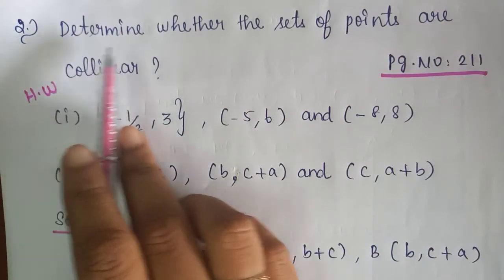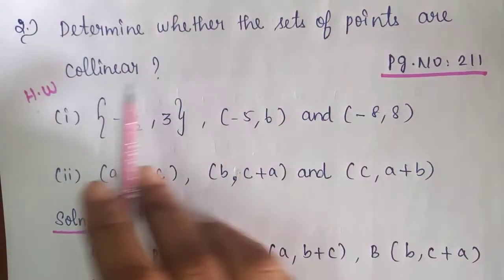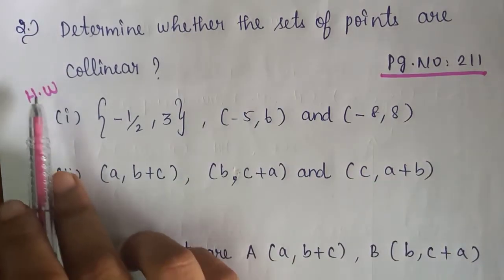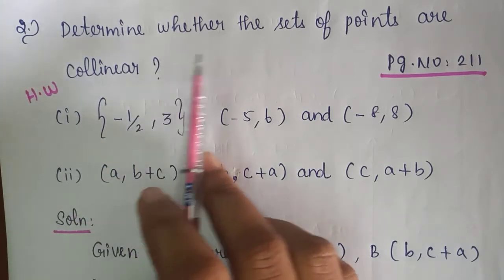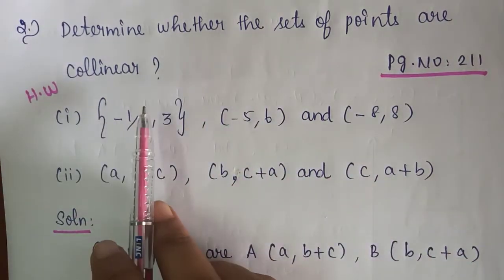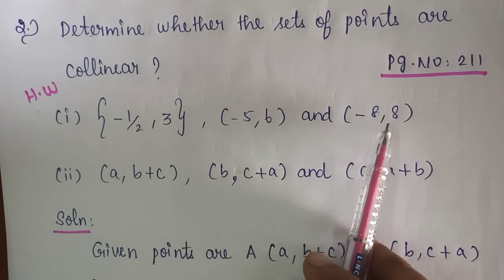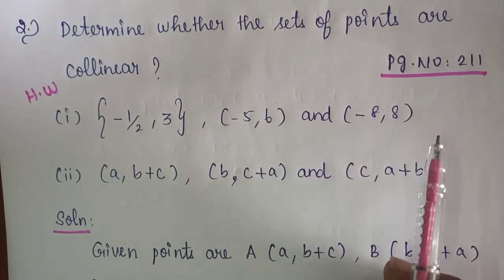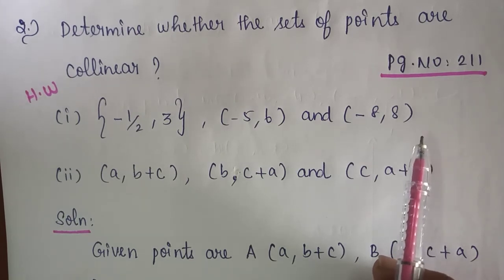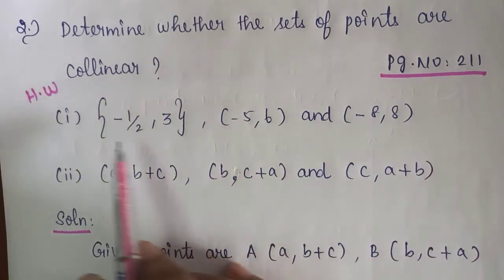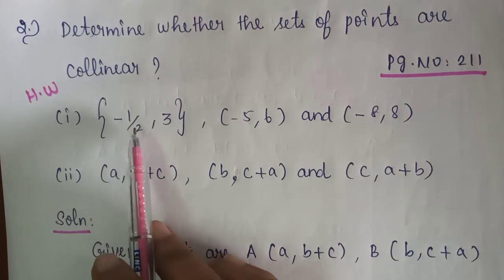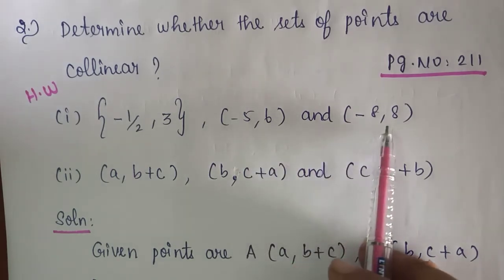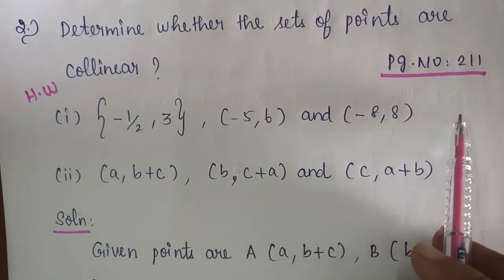Problem number 2 — determine whether the set of points are collinear, page number 211. If you substitute 3 points in the area of a triangle formula and get the value as 0, the given 3 points are collinear. First subdivision is your homework problem: points are (-1/2, 3), (-5, 6), and (-8, 8).